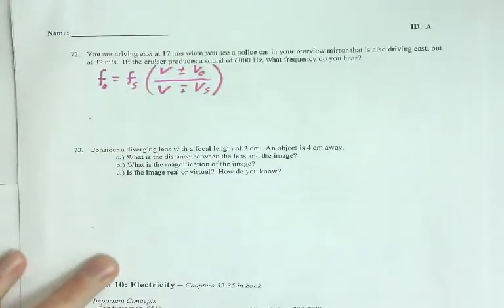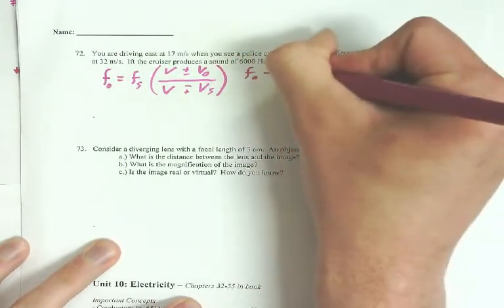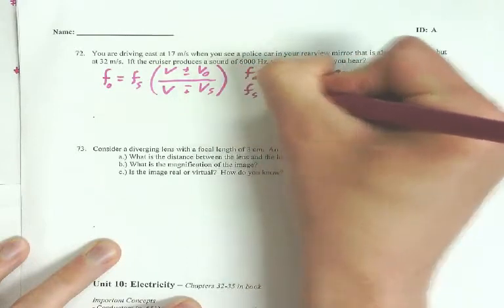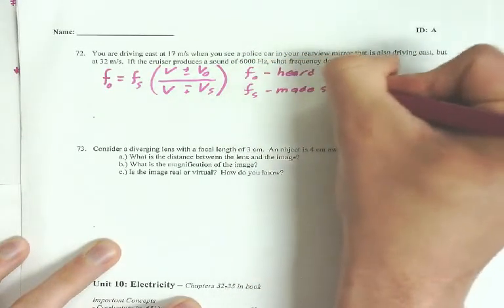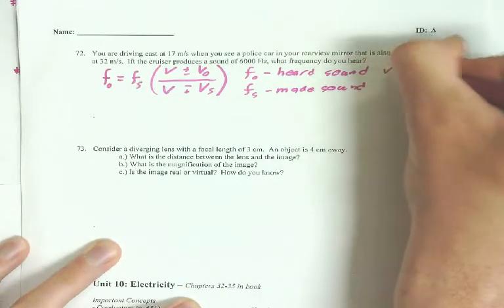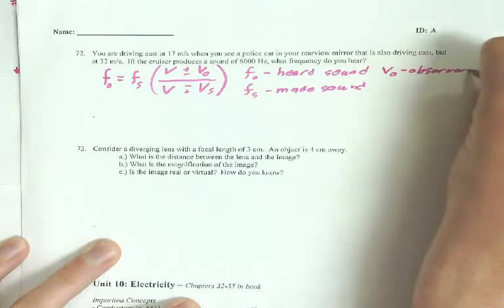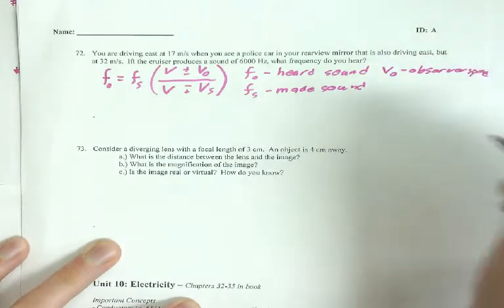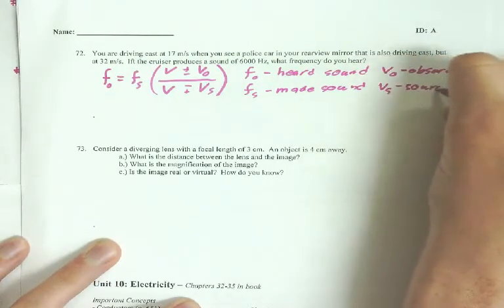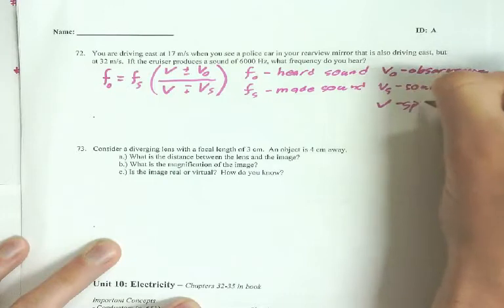Okay, and as just a reminder what everything is, F-O is the observed or the heard sound. F-S is the source or the made sound. V-O is the observer speed. V-S is the source's speed. And V is the speed of the wave, whatever the speed is.